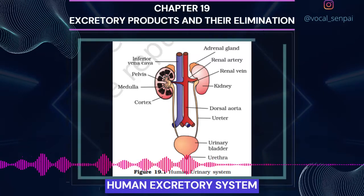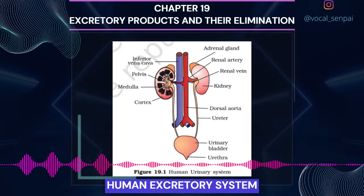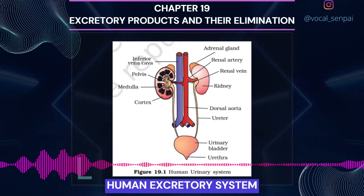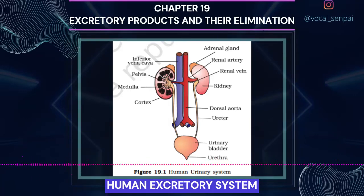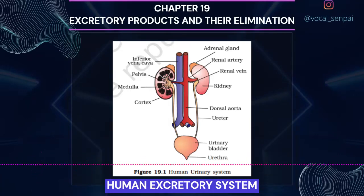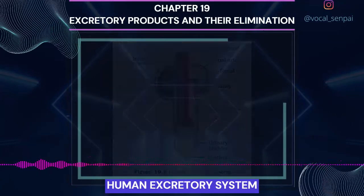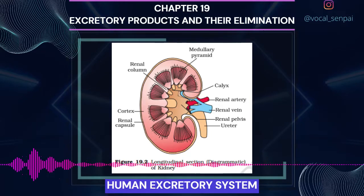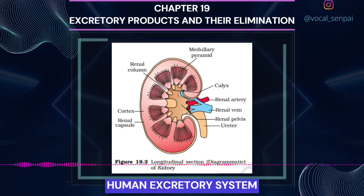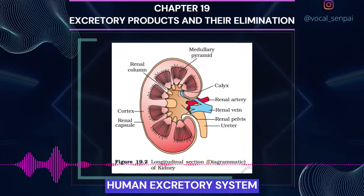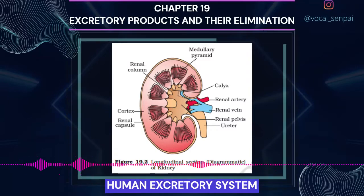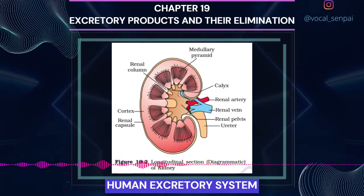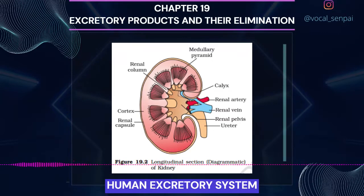Inner to the hilum is a broad funnel-shaped space called the renal pelvis with projections called calyces. The outer layer of kidney is a tough capsule. Inside the kidney, there are two zones: an outer cortex and an inner medulla. The medulla is divided into a few conical masses called medullary pyramids projecting into the calyces. The cortex extends in between the medullary pyramids as renal columns called columns of Bertini (figure 19.2).